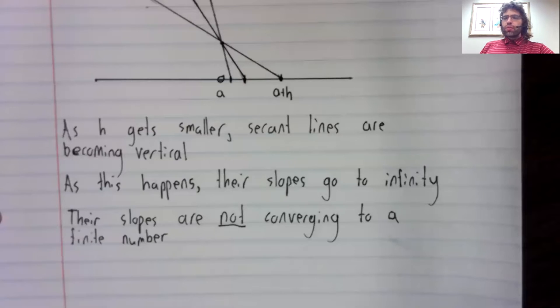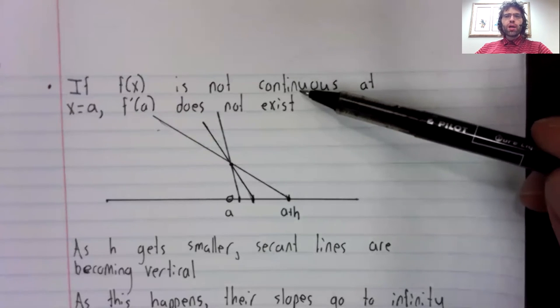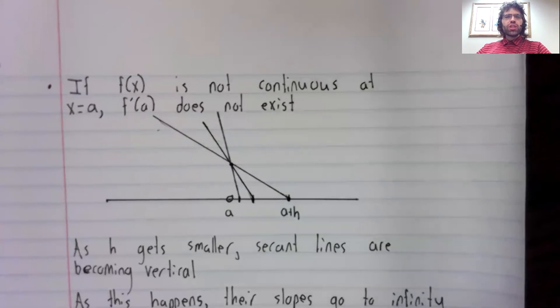We'll save it for another video. I did say that there are three main cases where the derivative doesn't exist. In this video, we've looked at one of them. To be differentiable at a point, a function needs to be continuous at a point.